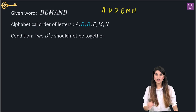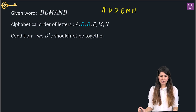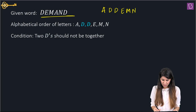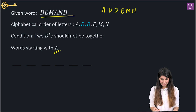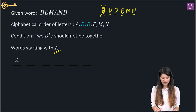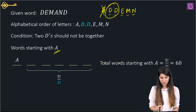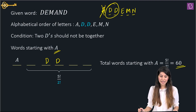We'll find all words starting with A in which no two D's are together, then proceed toward DEMAND. With A fixed, we have 5 remaining letters with two identical D's. The total arrangements are 5!/2! = 60. But some of those 60 words have both D's together — we need to subtract those.